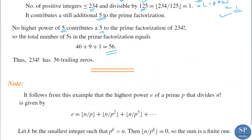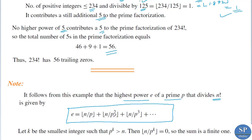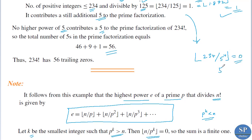From this example it follows that the highest power e of a prime p that divides n factorial is given by: e = floor(n/p) + floor(n/p²) + floor(n/p³) + … up to the term where p^k is less than n. Once p^k exceeds n, floor(n/p^k) = 0 and all subsequent terms vanish, as seen when floor(234/5⁴) = 0.